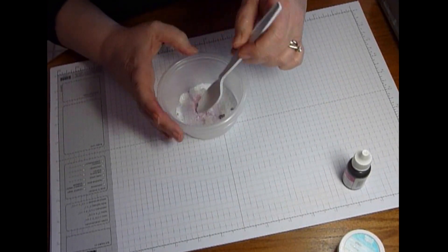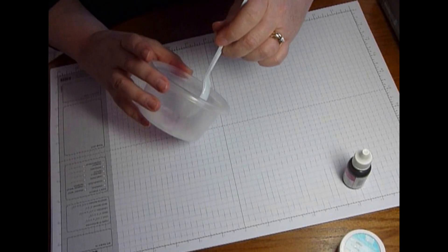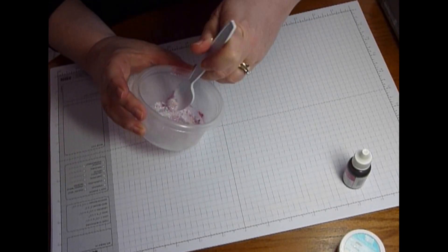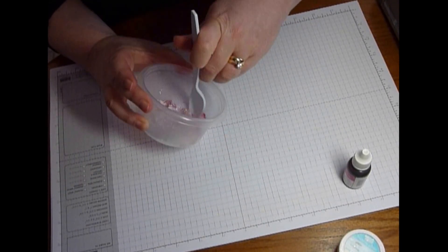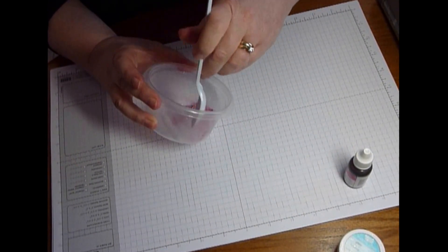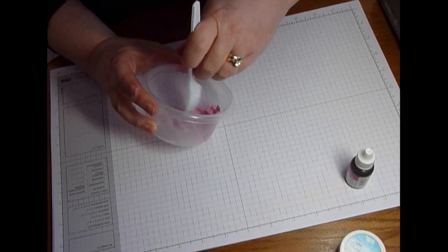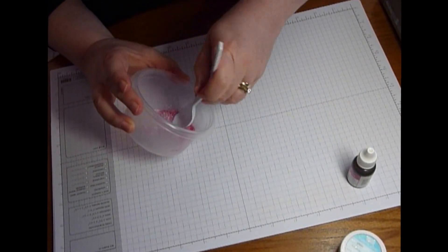You want to start with very little reinker and very little glitter and you can continually add more as you need to. I find it easiest just to rub this color really well up against the sides and you can see how the glitter is starting to take on the color of the reinker. Just keep working it in.